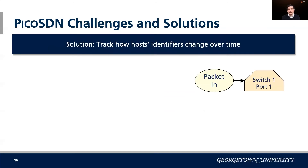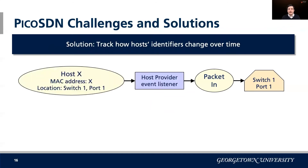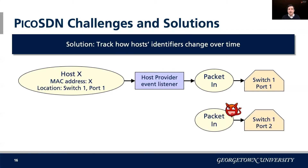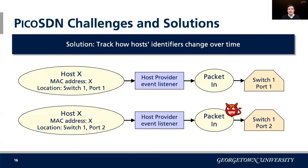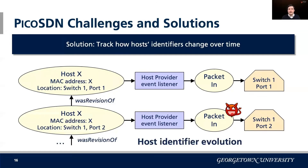We solved this by adding extra provenance to quickly identify how host identities change over time. A legitimate host connects by sending a packet into the data plane; that packet's information gets transformed into a host object. Sometime later, a malicious host on a different port tries to spoof that identifier. Notably, none of the major SDN controllers prevent this spoofing from occurring. We add a non-causal edge into the graph linking any of those changes such as moving location, so we can pinpoint exactly when and where these situations occur and see the causal effects clearly.